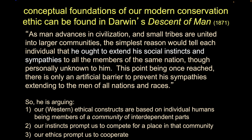Darwin would argue that our instincts lead us to compete for a place in that community, but that ethics counteract that short-term self-interest and push us to cooperate. There's a tension between selfish competition and cooperation that takes us to a better place as a larger group. Darwin's Descent of Man wrestles with how we deal with ethics in the context of conservation.